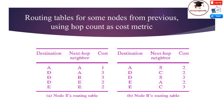The process of finding a suitable path from source node to destination node is called routing, and this is the primary responsibility of the network layer. To forward data packets, each node maintains a routing table. Routing tables for two nodes are shown using hop count as well as cost metric.